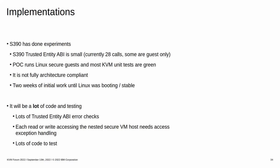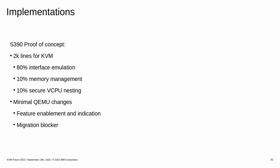The S390 team has created a proof of concept and done some experiments. Linux and KVM unit tests are running as nested secure guests, although full architecture compliance isn't achieved yet. The trusted entity emulation largely consists of error and access checks, so verifying the emulated API will be a lot of work. Luckily, the KVM unit tests already contain tests for the S390 trusted entity API. It's about 2000 lines of KVM code, 80% of which are ABI emulation, 10% memory management, and 10% secure vCPU nesting.